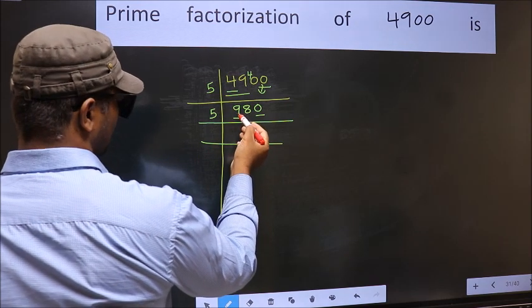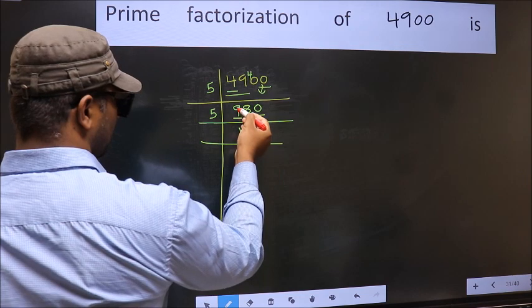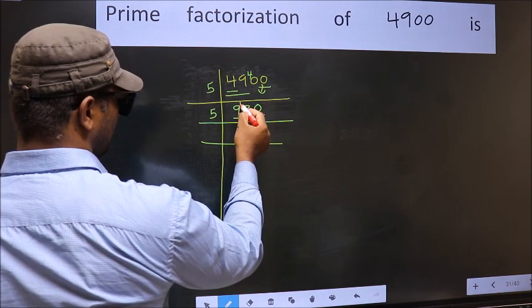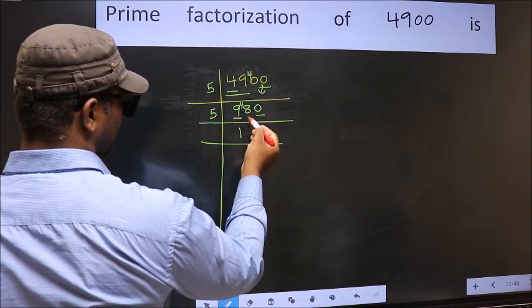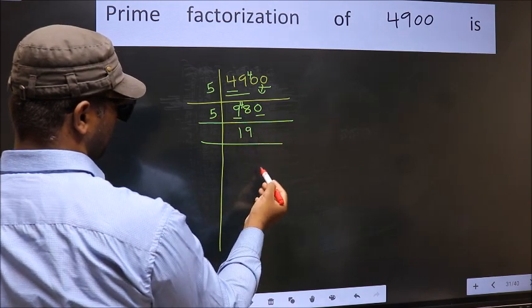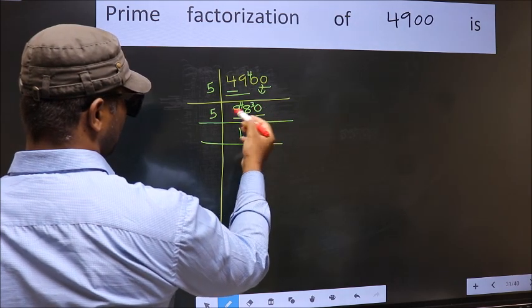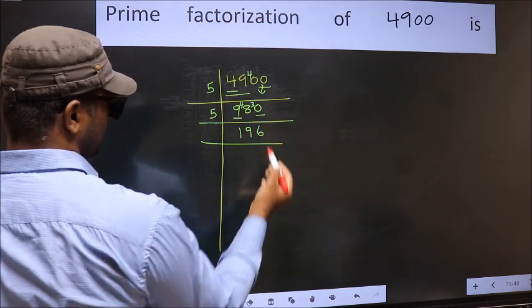First number is 9. A number close to 9 in the 5 table is 5. 9 minus 5 is 4, carried forward: 48. A number close to 48 in the 5 table is 5 nines, 45. 48 minus 45 is 3, carried forward: 30. When do we get 30 in the 5 table? 5 times 6 is 30.